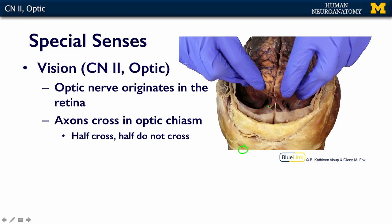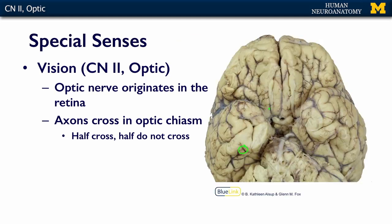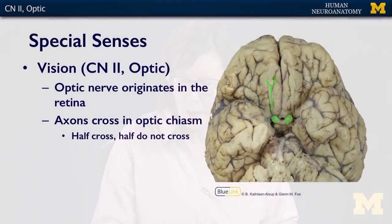If you're going to take a brain out of a skull, you've got to cut the optic nerve to do it. And here, on the undersurface of the brain, we can see our olfactory bulb and our olfactory tract, and here we can see the cut ends of the optic nerve. Just posterior, or caudally toward the back of the brain, is a structure called the optic chiasm, right here.